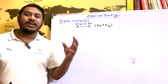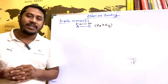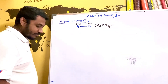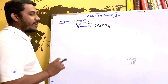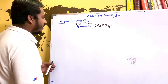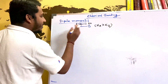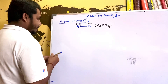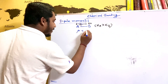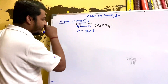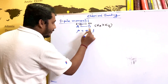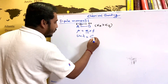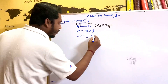In a covalent compound, the dipole moment goes from positive to negative. The dipole moment formula is mu equals e into d, where e means you have a partial charge and d means the distance between the atoms.